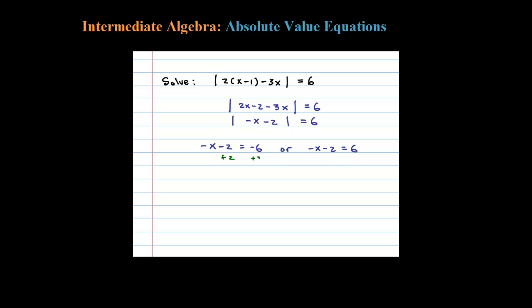Let's go ahead and do that. Adding 2, we get negative x equals negative 4. Multiplying both sides by negative 1, x equals 4. Now let's look at the other equation.